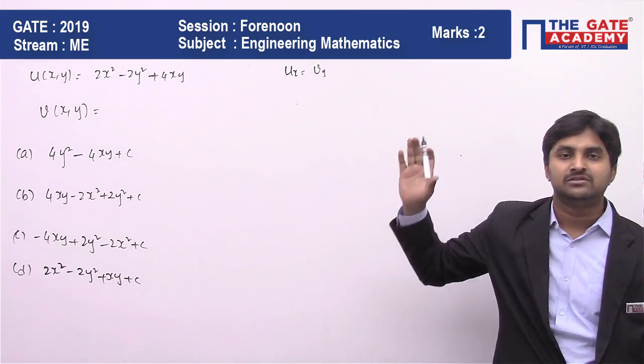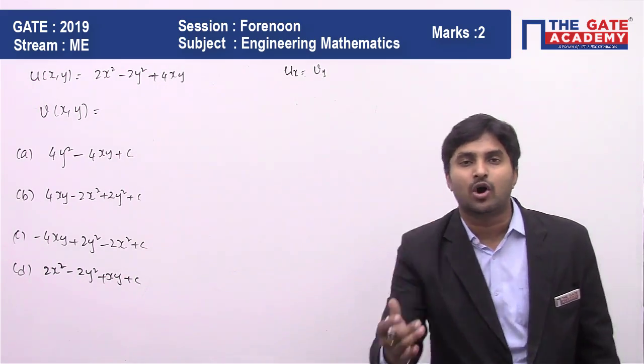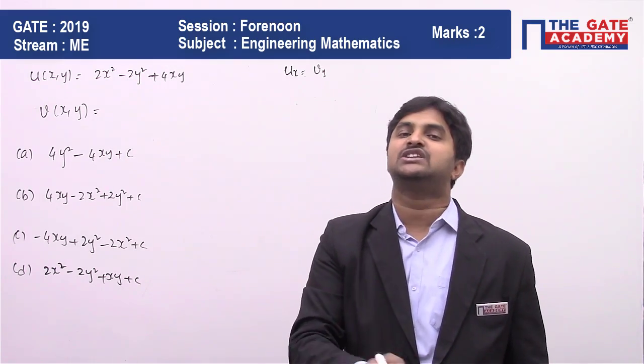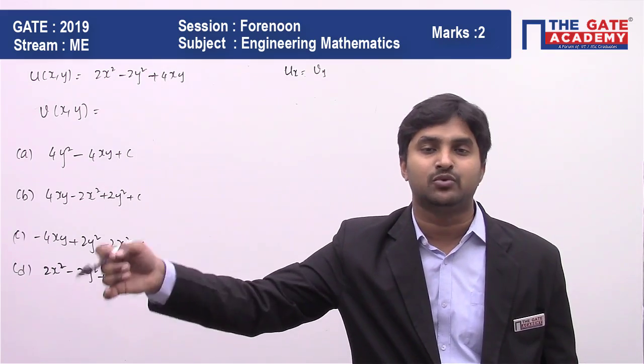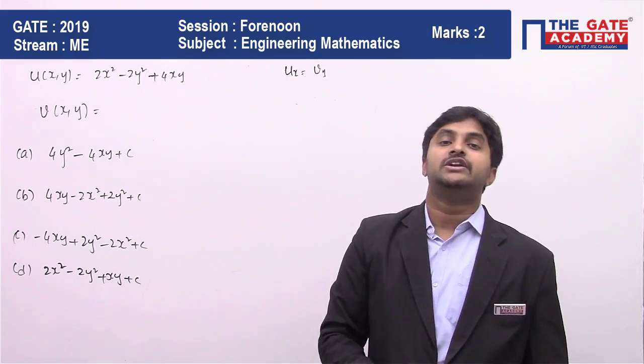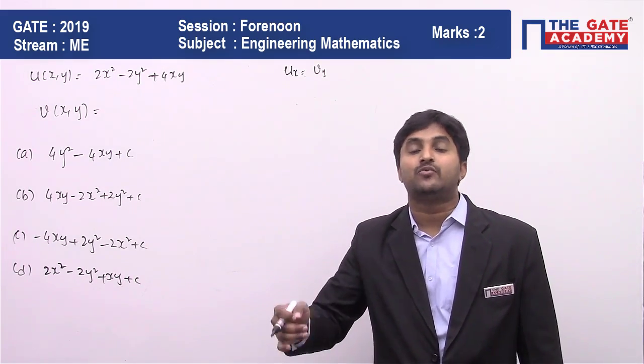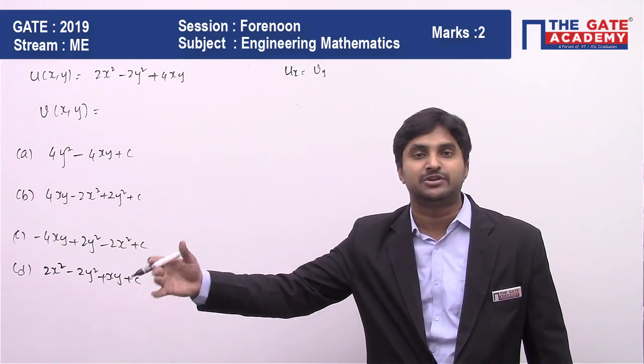The derivative of u with respect to x should equal the derivative of v with respect to y, and the derivative of u with respect to y should equal minus the derivative of v with respect to x. So let us satisfy this one.